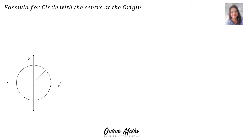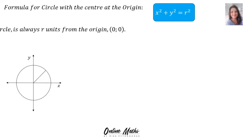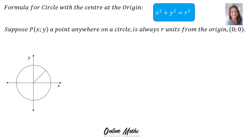Now the formula for the circle with the center at the origin is x² + y² = r². Suppose P, the point (x, y), is a point anywhere on a circle, and r is always r units from the origin. r means the radius, and the origin is the point (0, 0).